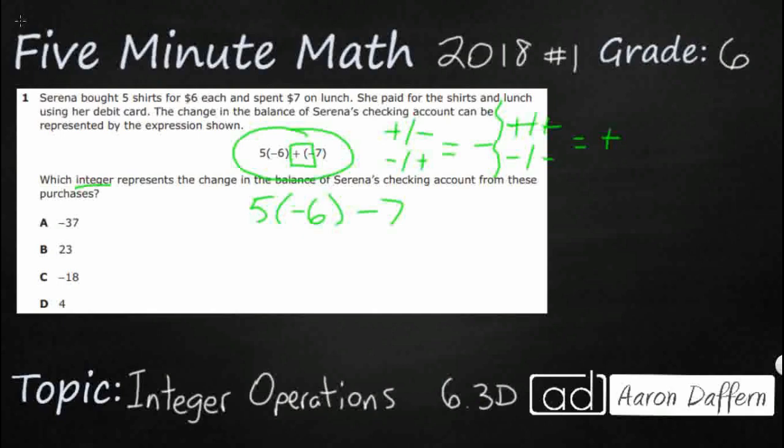So really, our next big question is what in the world is going on right here? What is this 5 doing outside of the parentheses, and why is there no operation there? Well, this is a secret I'm sure your teacher has taught you, but let me just remind you right here. Whenever you see a number outside of a parentheses, or maybe you see two parentheses together, it always means multiplication.